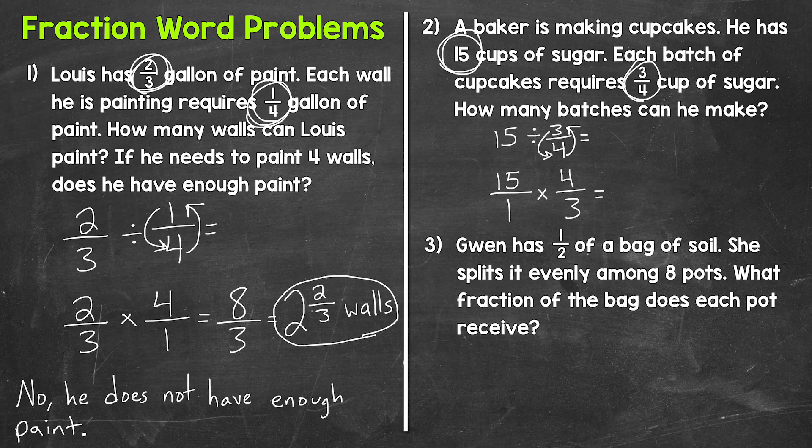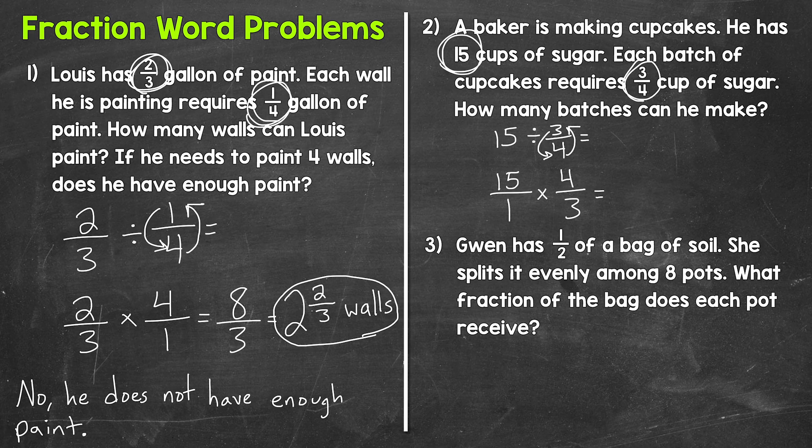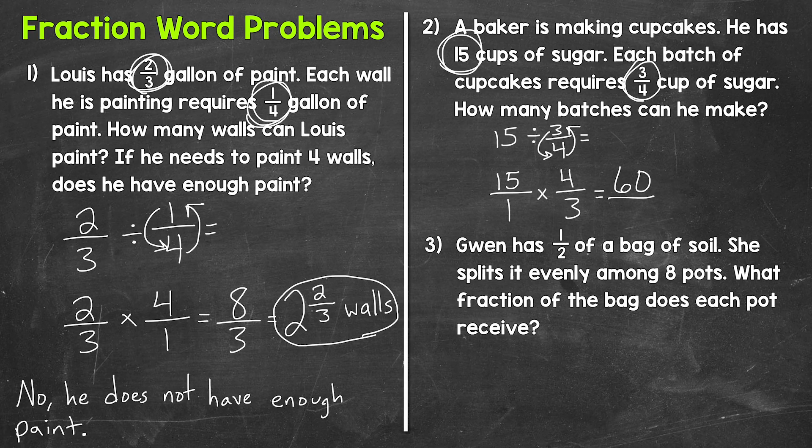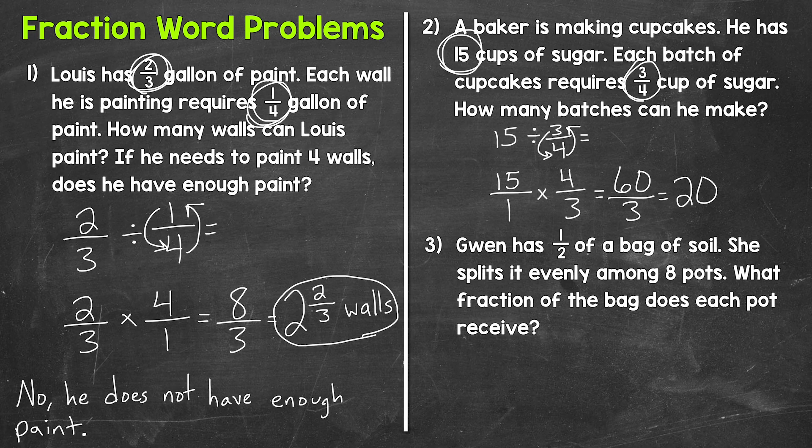And now we can multiply. Let's start with the numerators. So we have 15 times 4, that gives us 60. Now for the denominators, 1 times 3, that gives us 3. And we end up with 60 thirds, which is an improper fraction. So let's convert this to a mixed number by dividing the numerator, 60, by the denominator, 3. So we need to do 60 divided by 3, that gives us 20. And we do not have a remainder, this is just going to be a whole number here. So our answer is 20. How many batches can he make? 20 batches.